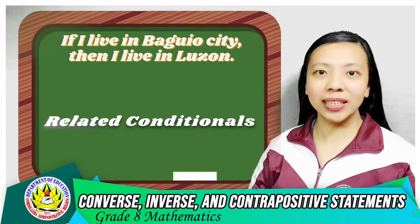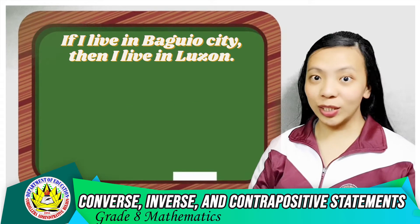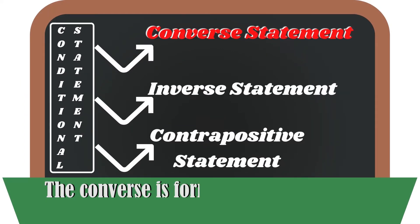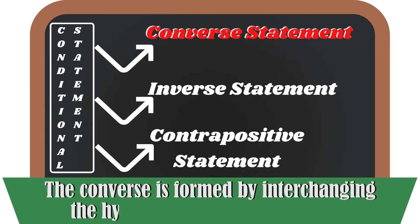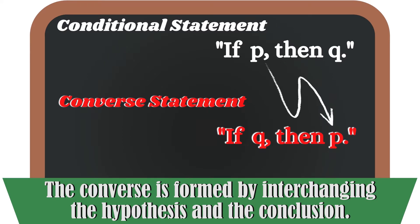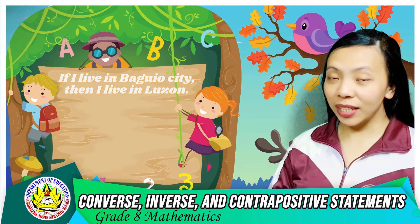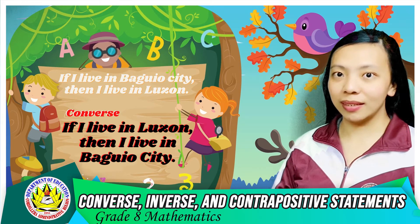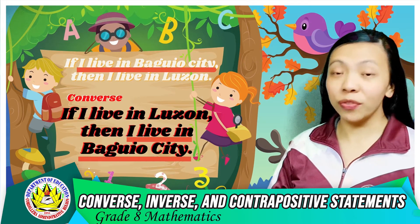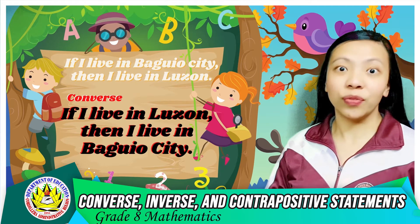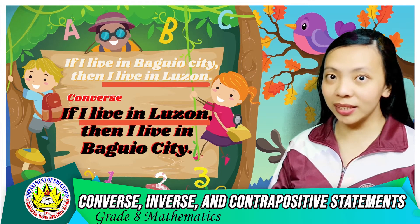Let's now write the three related conditionals. Starting with the converse: the converse of a conditional is formed by interchanging the hypothesis and the conclusion. In symbolic form, it is written as: if q, then p. Using the given example, the converse is: 'If I live in Luzon, then I live in Baguio City.' The hypothesis and conclusion have been swapped.